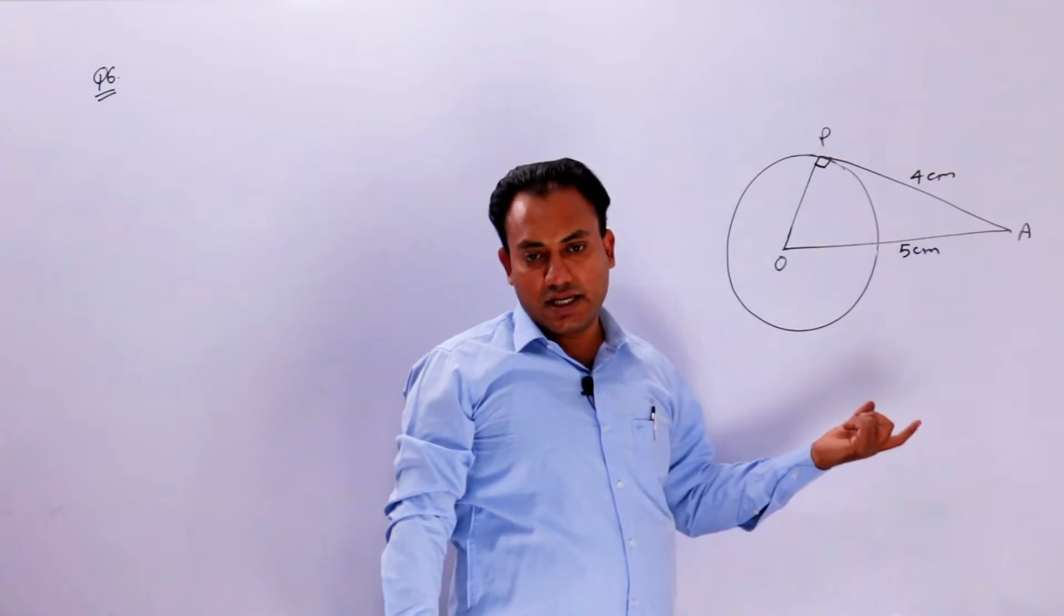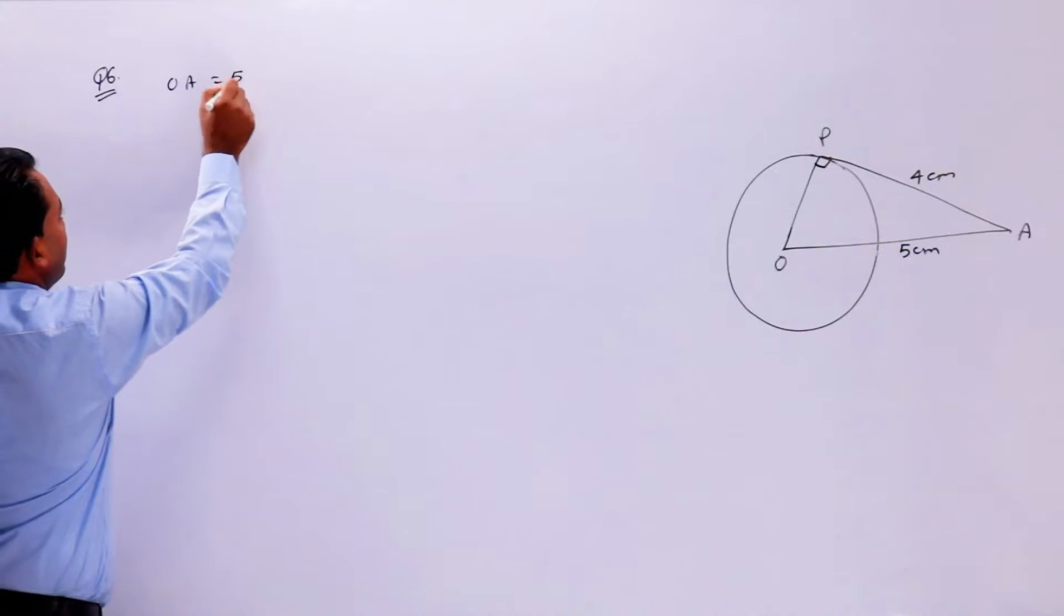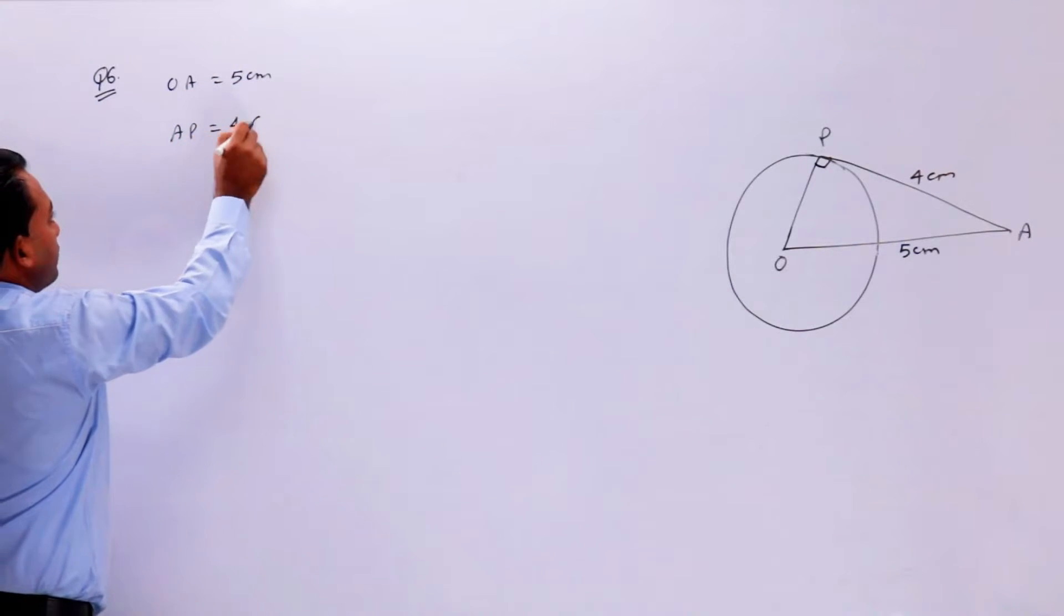We will use Pythagoras theorem to find the radius of the circle. OA is equal to 5 centimeter and AP is equal to 4 centimeter.